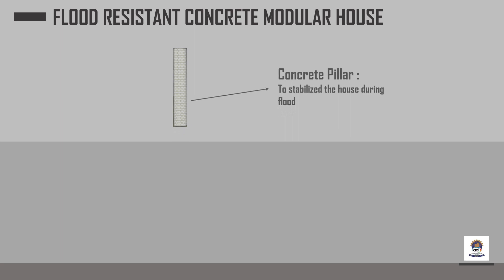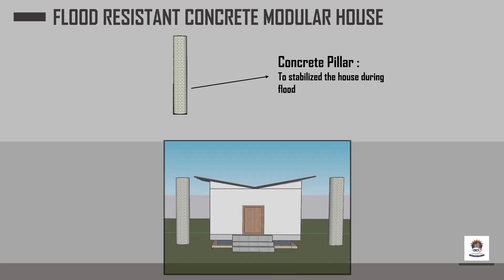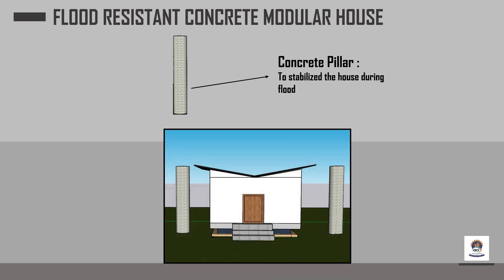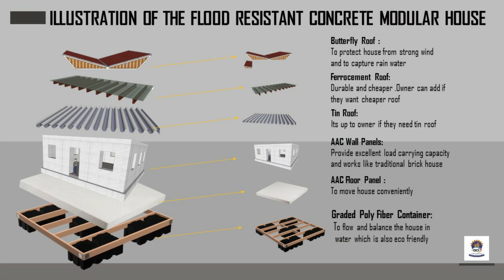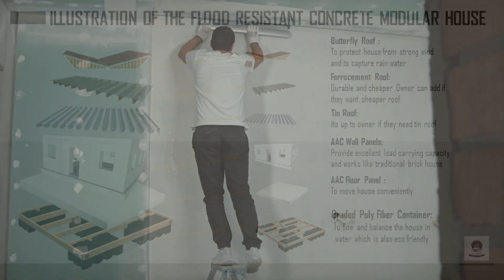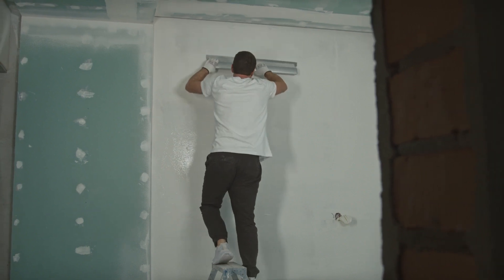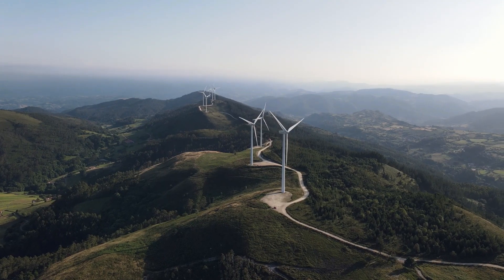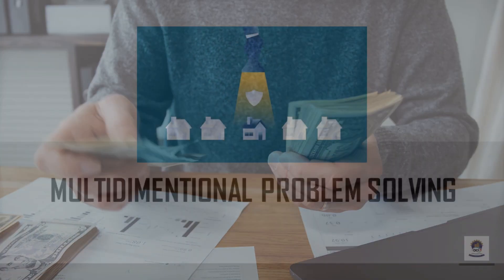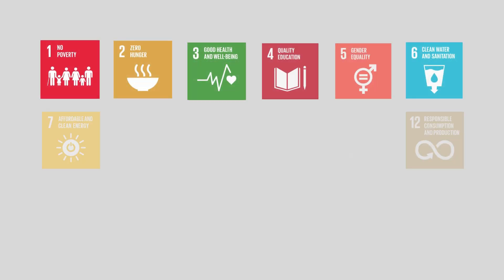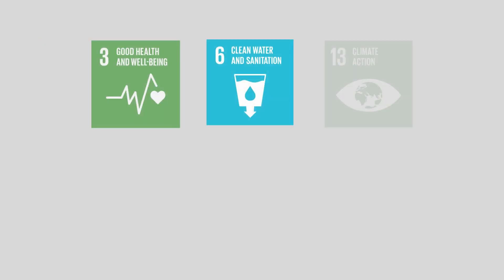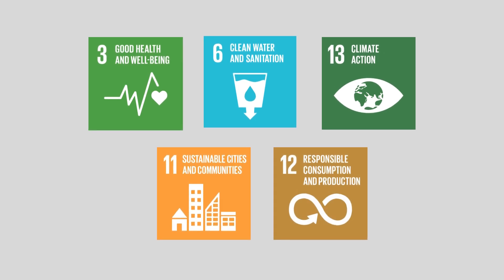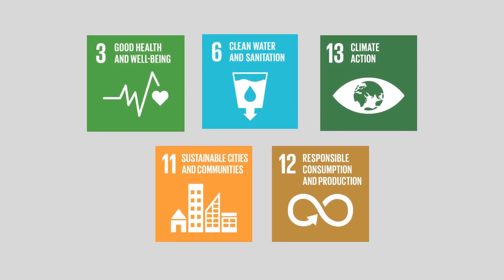The house will be tied to concrete pillars to stabilize it and keep it in the exact place where it was before the water level rose — so the house would not move during the flood. The prime features of our modular house are: it is a precast house so there is no need for mortar plaster; it is eco-friendly; it is cost-effective; and it provides multi-dimensional problem solving. Our idea is targeting SDG goals 3, 6, 11, 12, and 13.